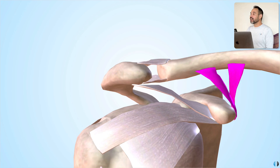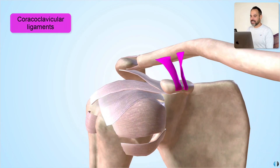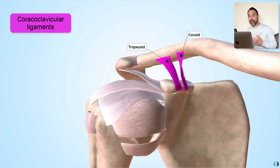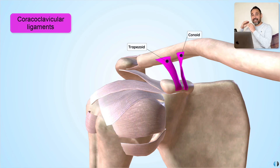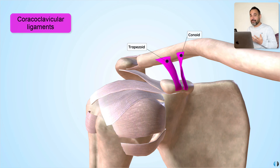The coracoclavicular ligaments have two components: the conoid and trapezoid ligaments. These are super important because they provide vertical stability, attaching the coracoid process to the clavicle. When we do have an ACJ dislocation, it is common that these ligaments will tear and therefore lift that clavicle up superiorly compared to the coracoid. So think about that when your patient has an ACJ dislocation.